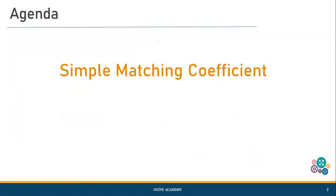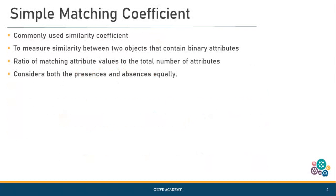Let's go by the definition of what Simple Matching Coefficient is. It is one of the commonly used similarity coefficients and it is basically used to compare two different binary objects containing binary attributes. It is essentially a ratio of the matching attribute values, and it is going to consider both the presences and the absences equally.